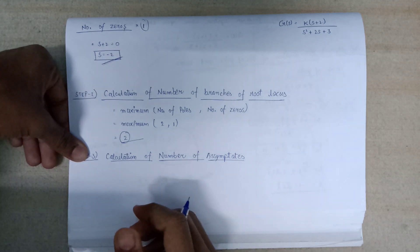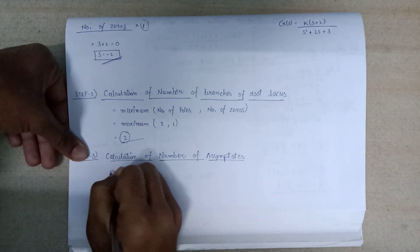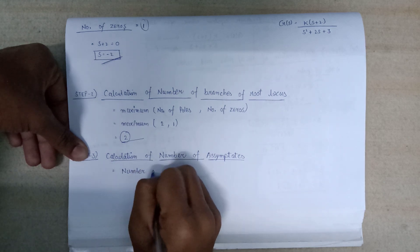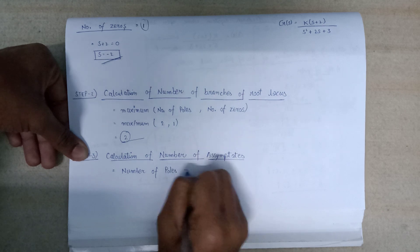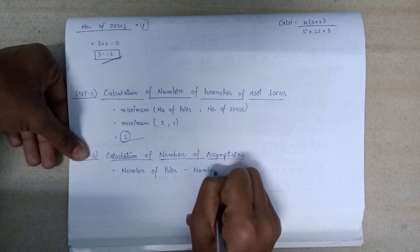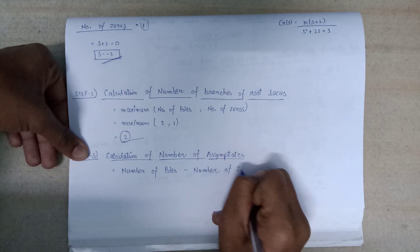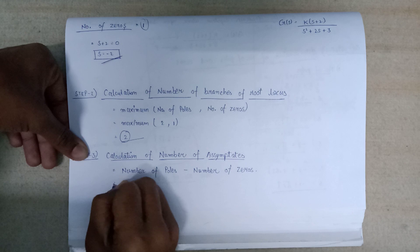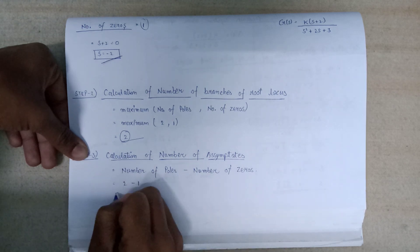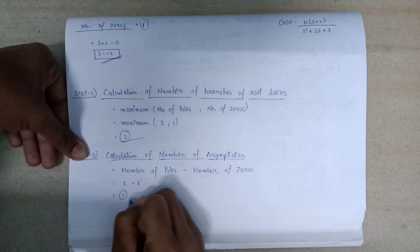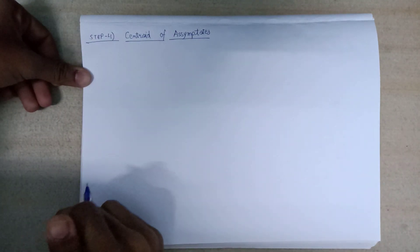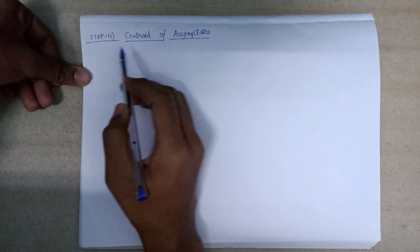The number of asymptotes can be calculated by the formula: number of poles minus number of zeros. Here that is 2 minus 1, so the number of asymptotes equals 1.